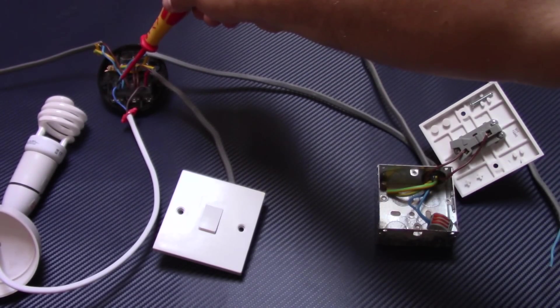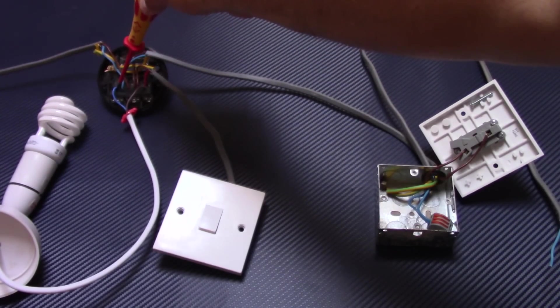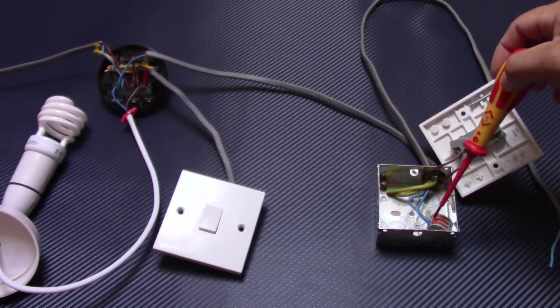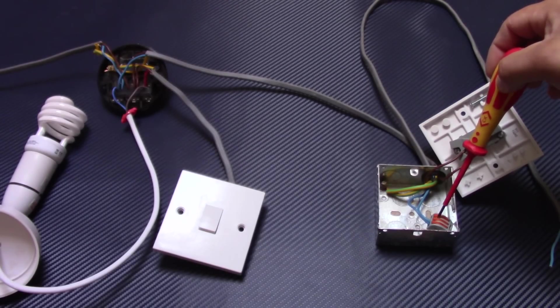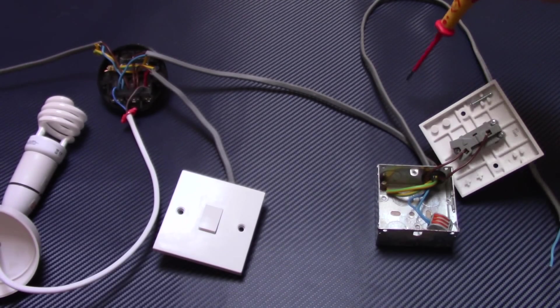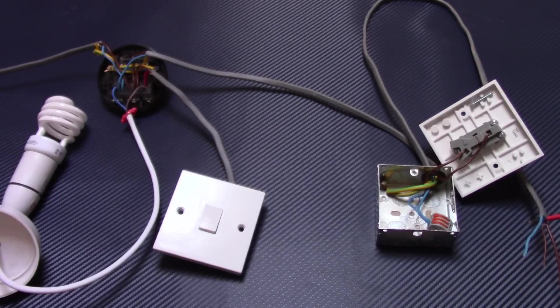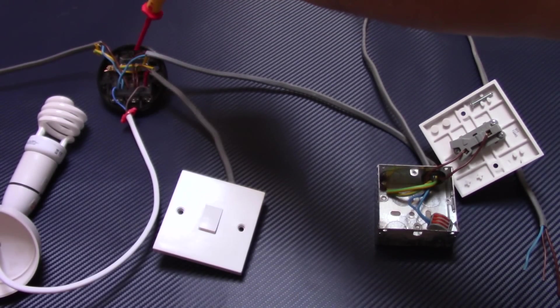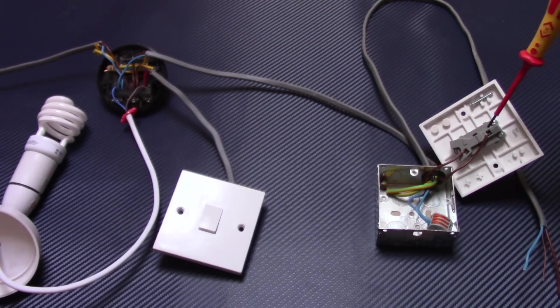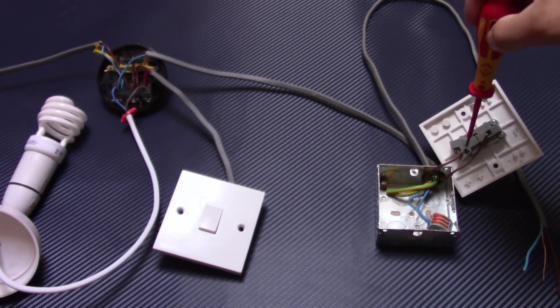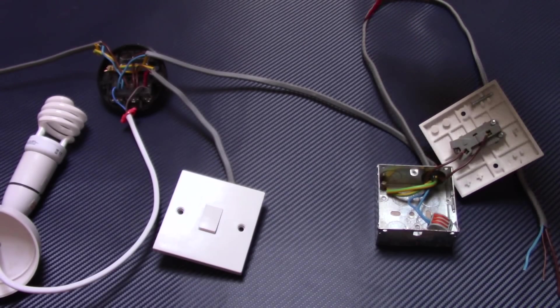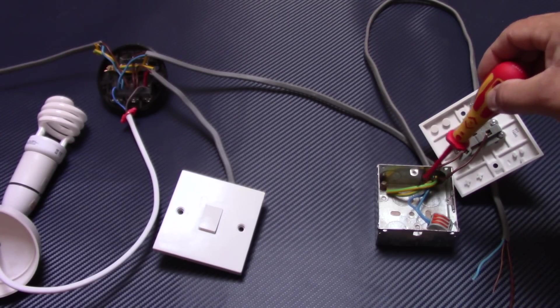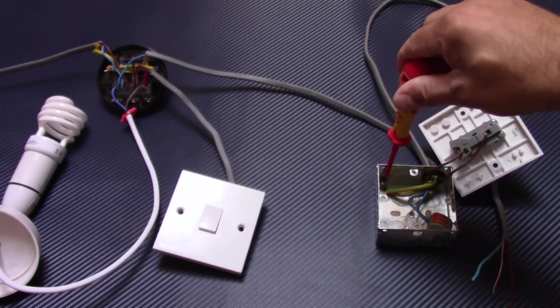So this is the connection: we've got neutral taken from neutral terminal from the ceiling rose from the last room, then it goes to the switch and links together with the neutral that goes straight to our set of lights. Then permanent live taken from the loop by this cable goes to comm terminal in one-way switch, and then from L1 goes to this cable to the set of lights. And two earth conductors are just linked together and connected to the earth terminal in the box.